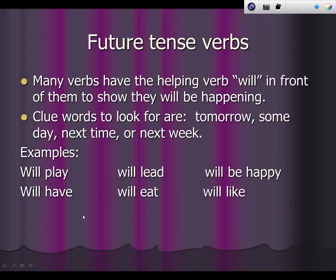Future tense verbs are verbs that have the helping verb will in front of them to show that they will be happening. Clue words to look for in the future tense are tomorrow, someday, next time, or next week. Some examples are we'll play, we'll lead, we'll be happy, we'll have, we'll eat, we'll like.